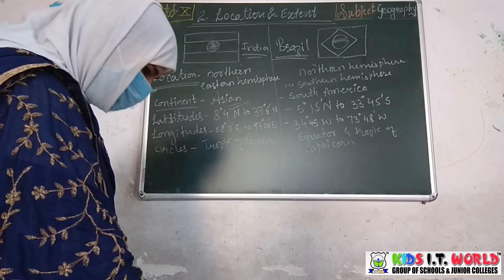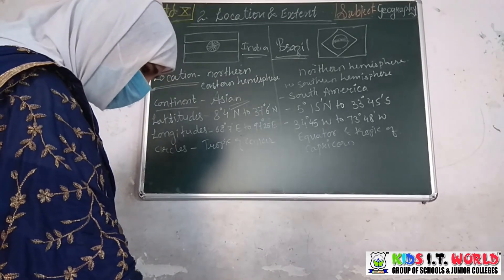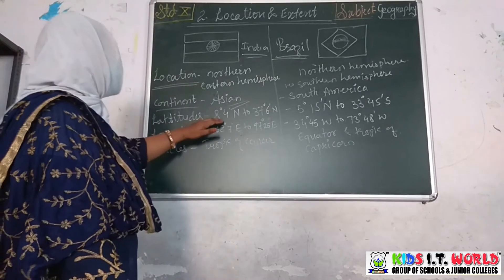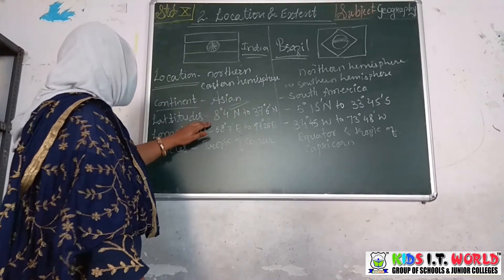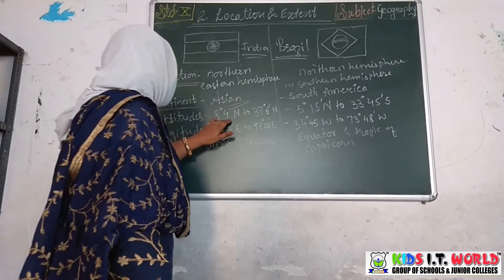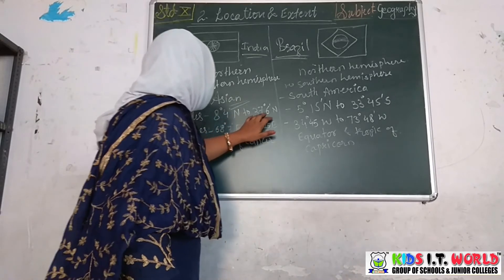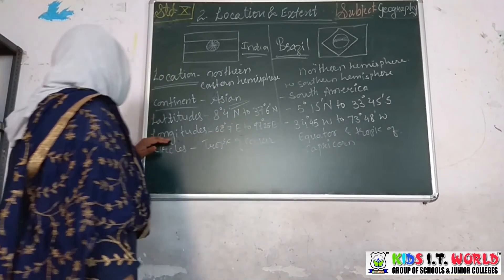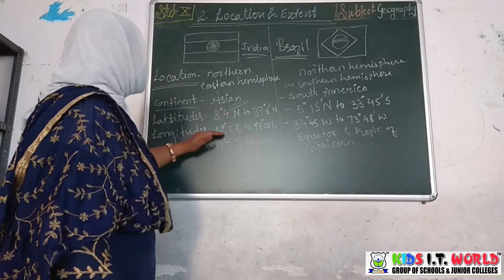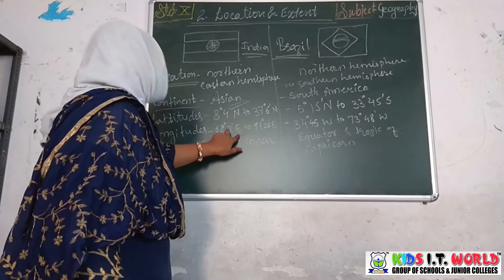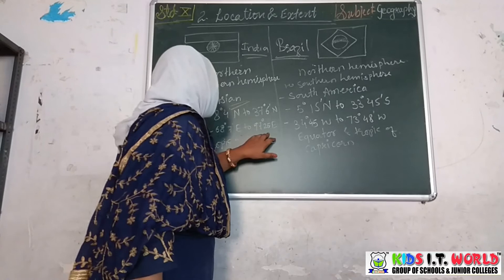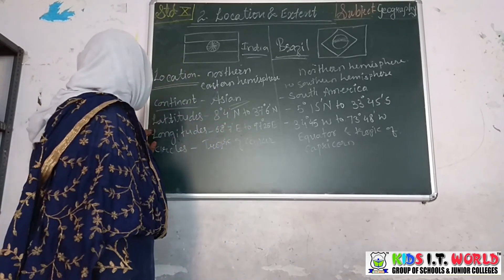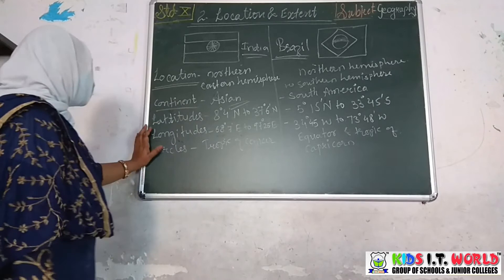Now let's look at the latitudinal and longitudinal extent of India. India extends latitudinally from 8 degrees 4 minutes North to 37 degrees 6 minutes North. The longitudinal extent of India is from 68 degrees 7 minutes East to 97 degrees 25 minutes East.